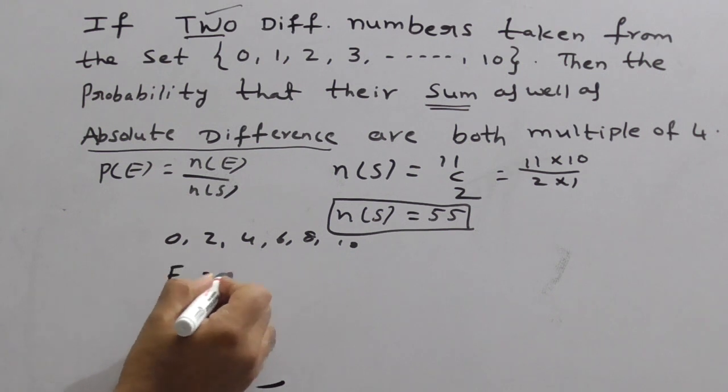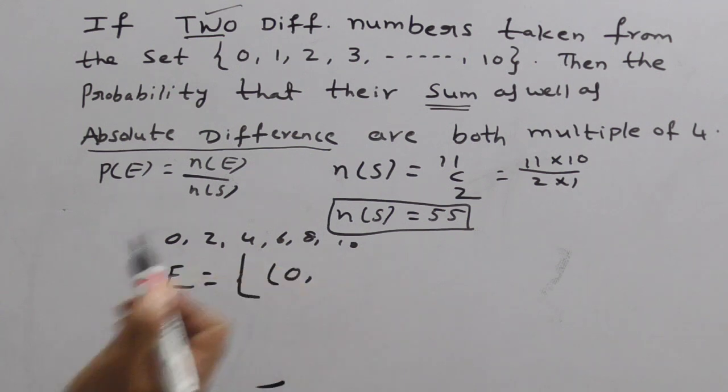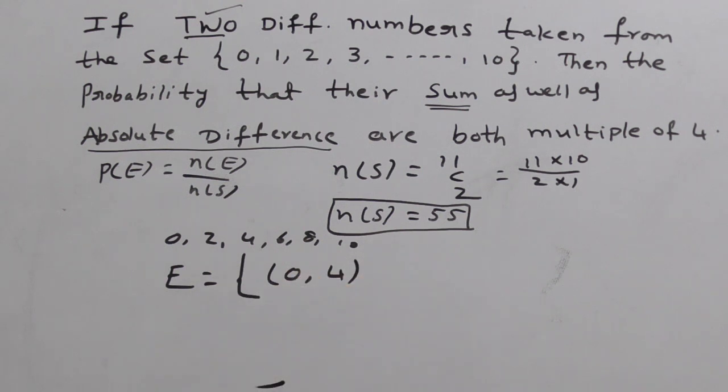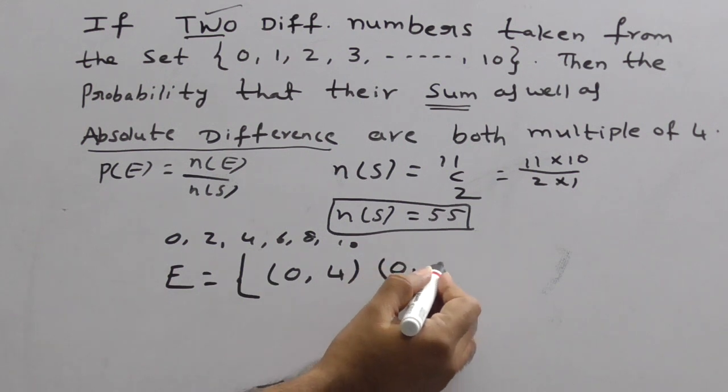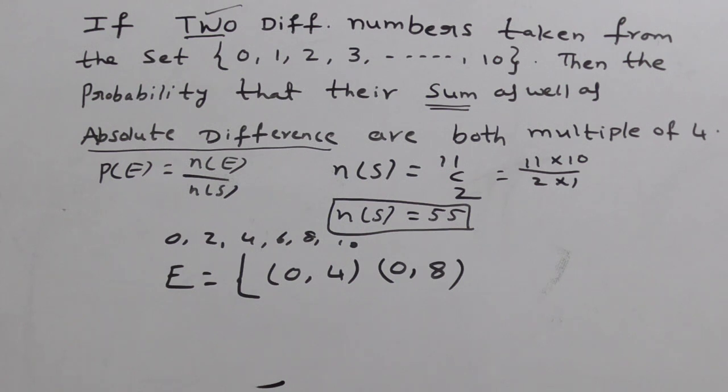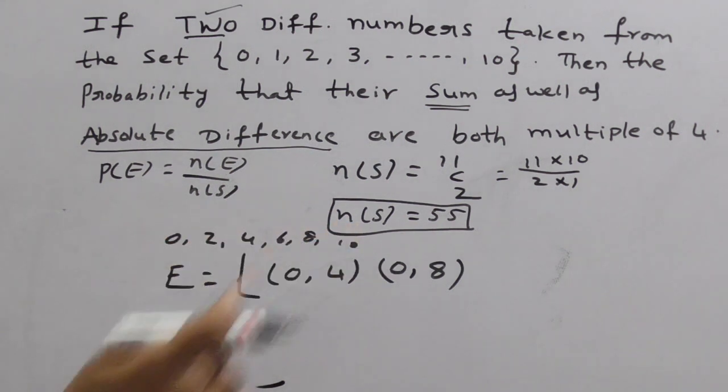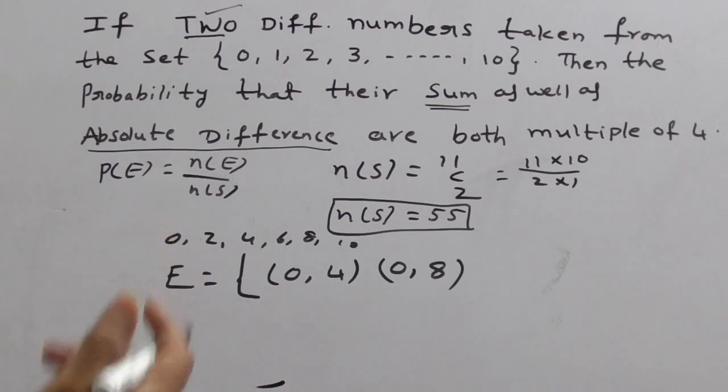Now, here you can write event set. First go for 0. For 0, the X2, what is the result? Sum and absolute difference should be multiple of 4. So you can write simply 0, 4. 0 plus 4 and 0 minus 4. 4 is multiple of 4. The next, with 0 you get 8. 0 plus 8, 0 minus 8, both 8 is multiple of 4. So after 0, 6 not possible, 0, 10 not possible clearly. Why? Because 6 and 10 are not multiples of 4.